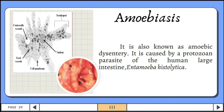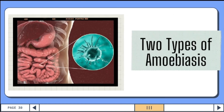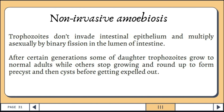Amoebiasis is also known as amoebic dysentery, caused by the protozoan parasite Entamoeba histolytica of the human large intestine. There are two types: non-invasive amoebiasis and invasive amoebiasis. For non-invasive amoebiasis, trophozoites don't invade intestinal epithelium and multiply asexually by binary fission in the lumen of the intestine. After certain generations, some daughter trophozoites grow to normal adults, while others form pre-cysts and then cysts before being expelled.